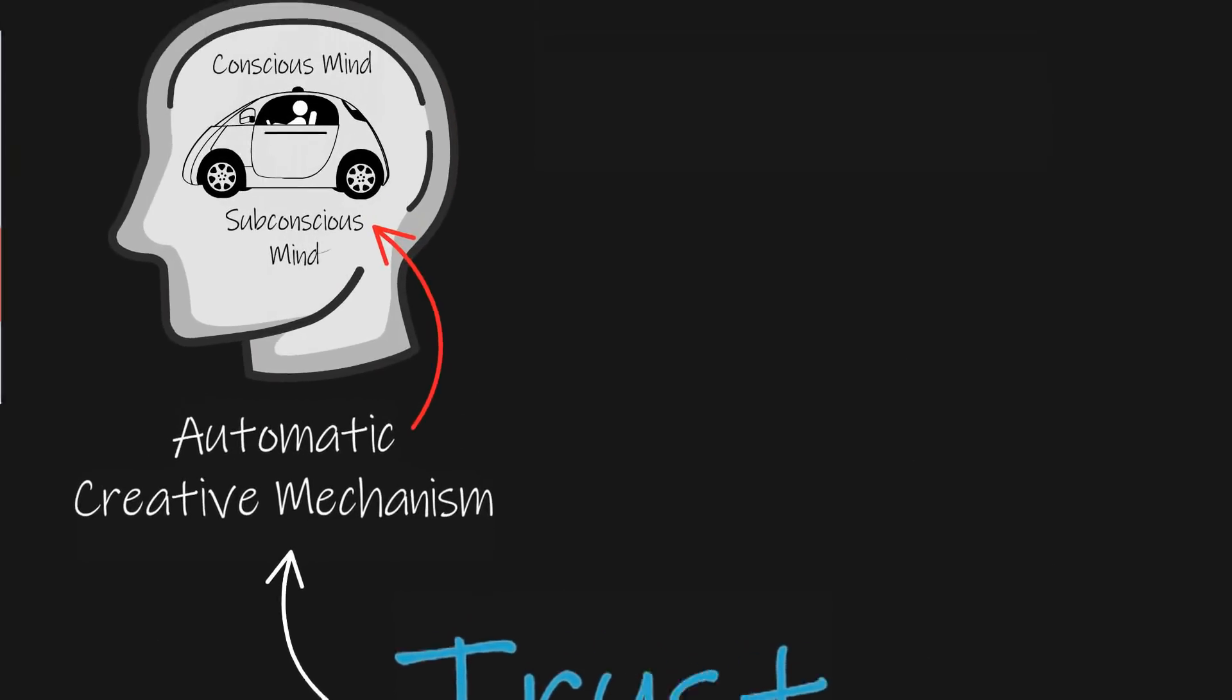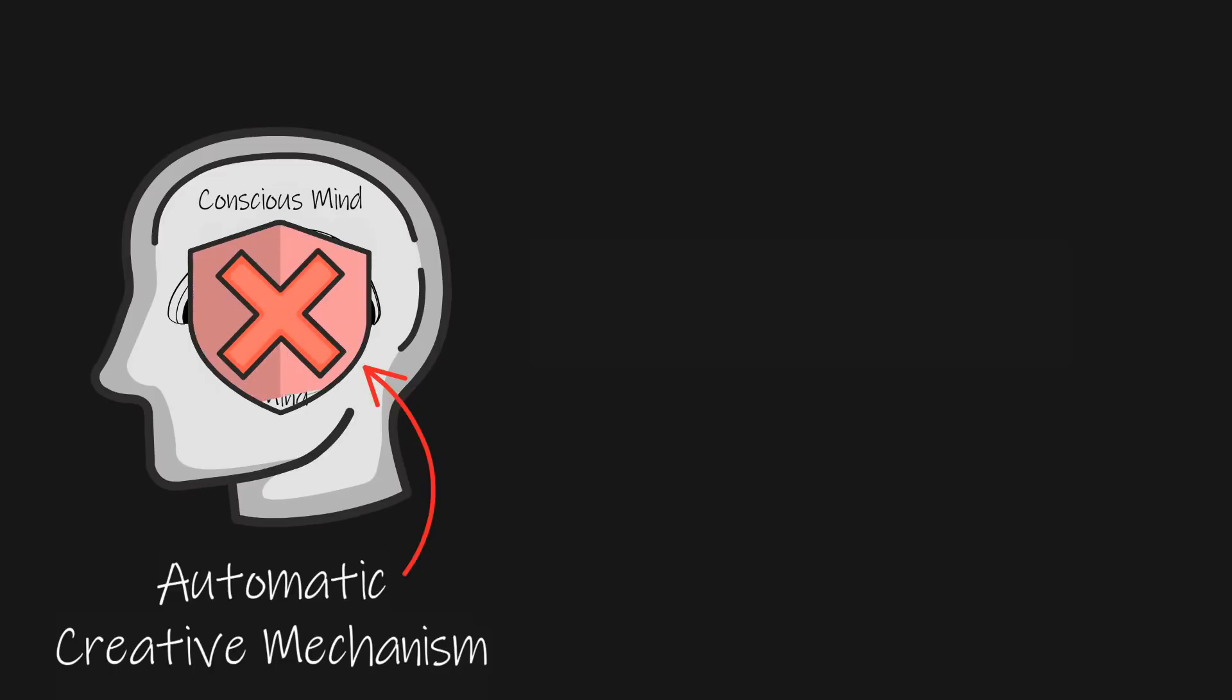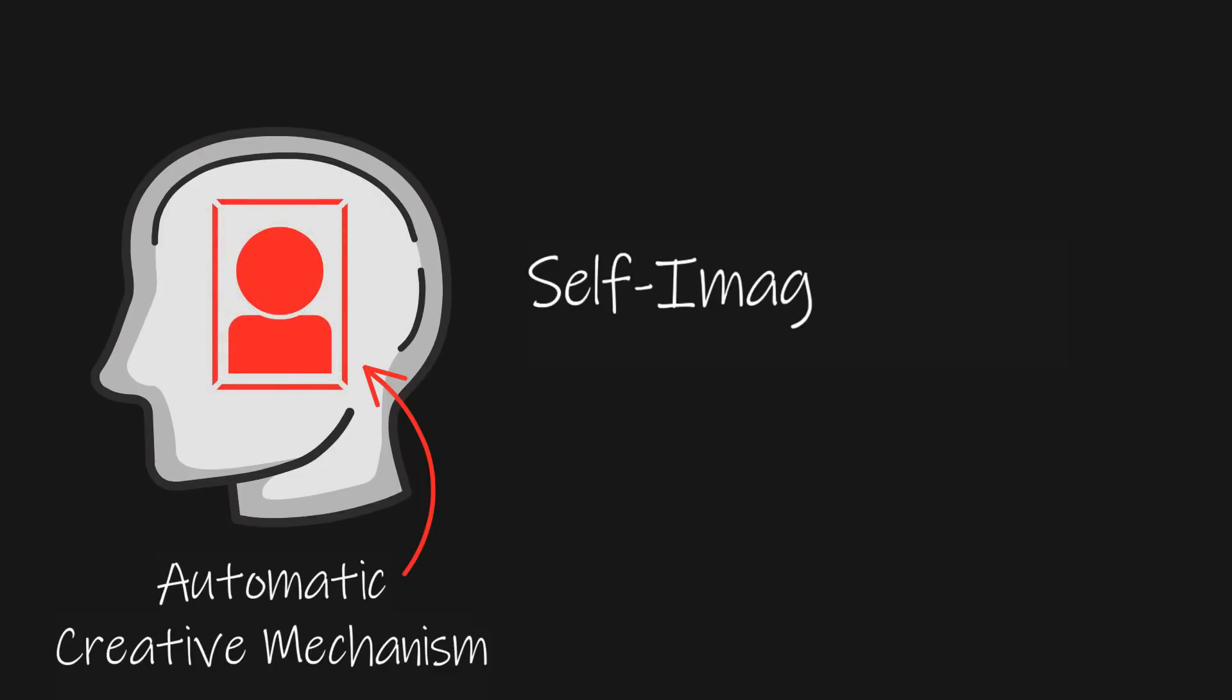If you find it hard to let go and trust your automatic creative mechanism to get you to your goal without you having to analyze every step along the way, then your self-image is not aligned with your goal. In other words, some part of you doesn't believe that you're worthy of achieving your goal.